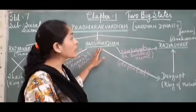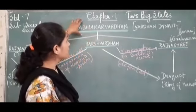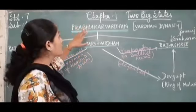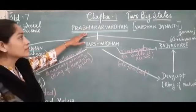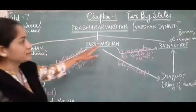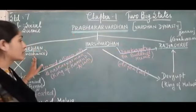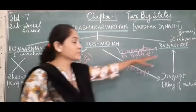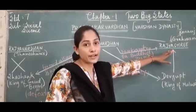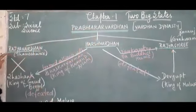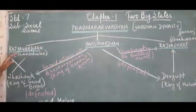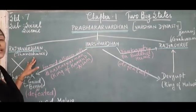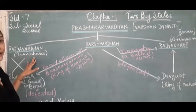Before learning about Harshvardhan, let us start from the dynasty — the Vardhan dynasty. Prabhakar Vardhan had 3 children: Rajya Vardhan, Harshvardhan, and Rajyashri. Rajya Vardhan was ruling over Thaneshwar, which is in the areas of Punjab and Haryana.